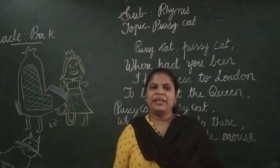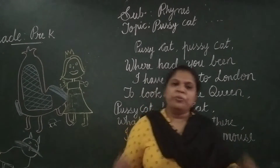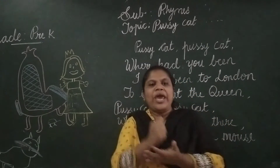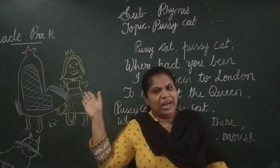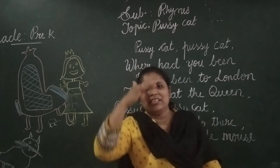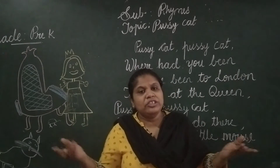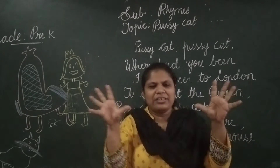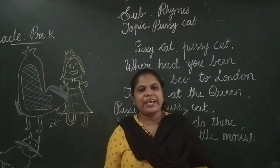Once again. Pussycat, pussycat, where have you been? I have been to London to look at the queen. Pussycat, pussycat, what did you do there? I frightened the little mouse under her chair.